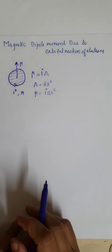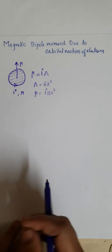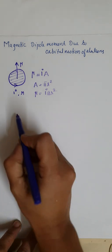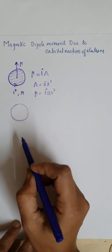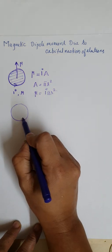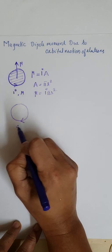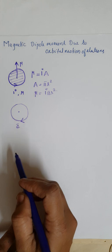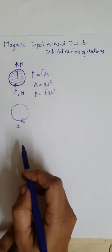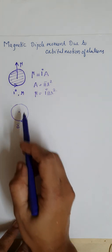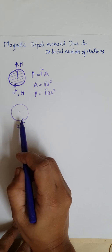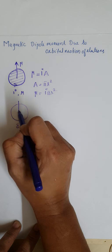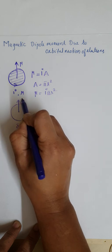Similarly, we can consider the case of an electron which is moving around the nucleus. An electron is a charged particle, and if this electron revolves around the nucleus in a fixed orbit, then similar to the first case, a magnetic field will be induced, or a magnetic dipole moment will be induced in it, acting in this direction.